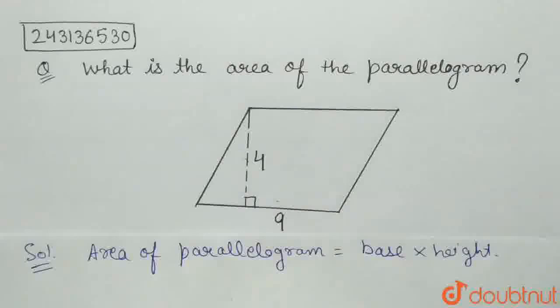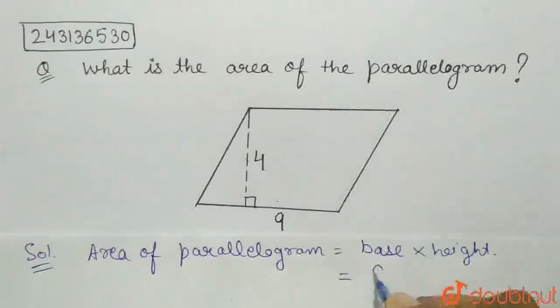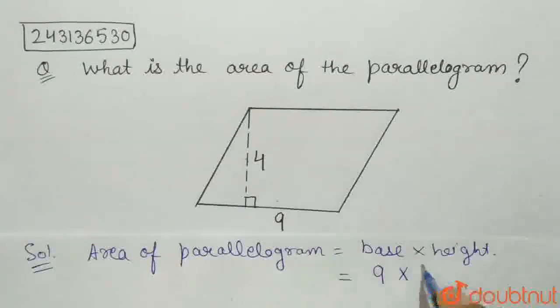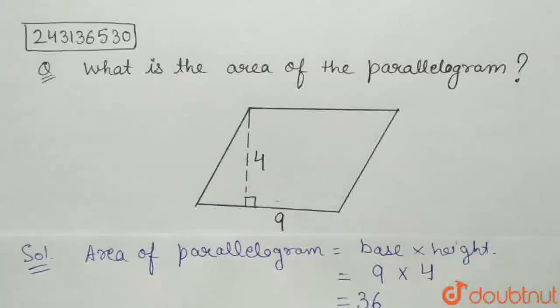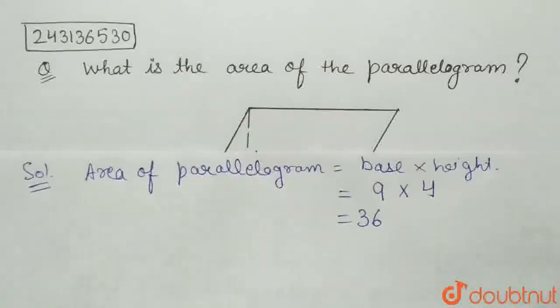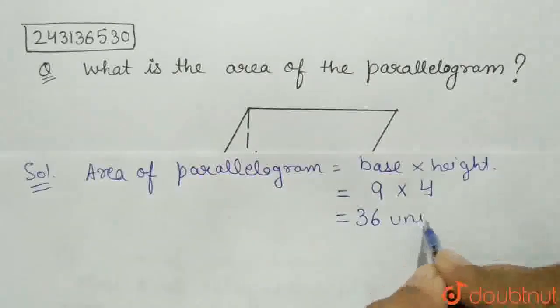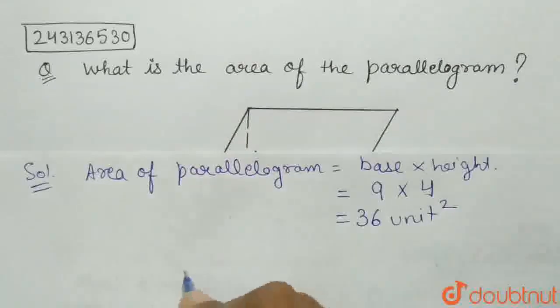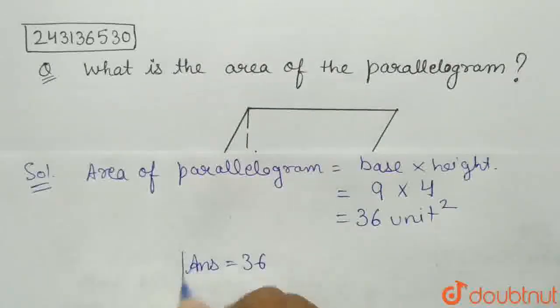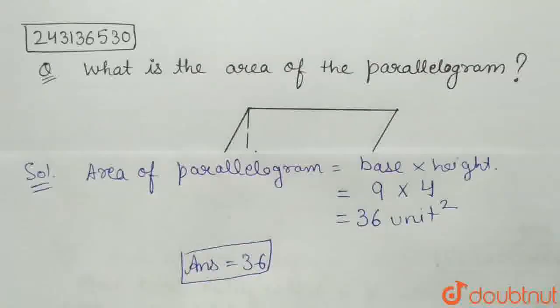Area of parallelogram will be base 9 multiply height which is 4. This will give 36. The area of parallelogram is 36 unit square. The answer is 36.